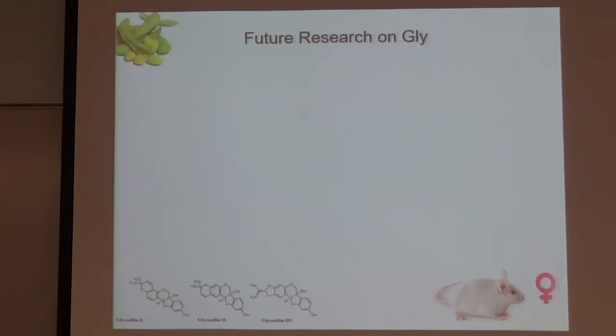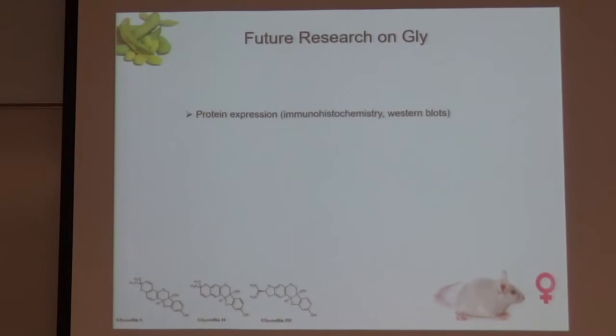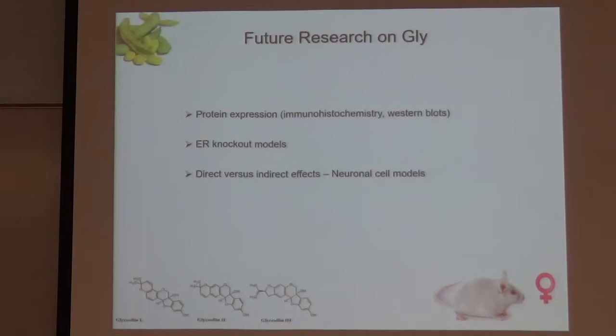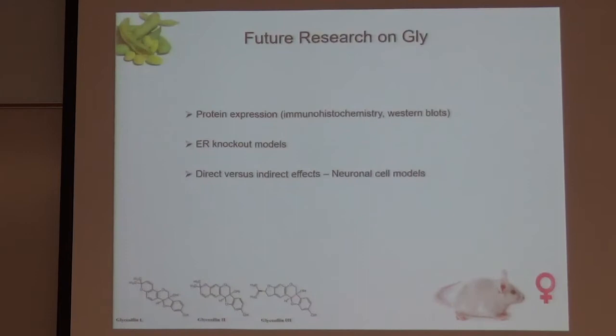Our overall summary: glyceolin sometimes acts similarly to estrogen and sometimes opposes its effect — maybe acting as a selective estrogen receptor modulator. It exhibits potentially estrogen receptor-independent effects on gene expression. It upregulated genes involved in neurogenesis and downregulated pro-apoptotic genes involved in neurodegeneration, indicating a potential neuroprotective role in the brain. Future directions in the lab include looking at protein expression, using estrogen receptor knockout models to parse out mechanisms of action, and determining whether these are direct effects or indirect effects via the periphery using neuronal cell models. Behavioral effects will also be critical to develop glyceolin as a dietary supplement.